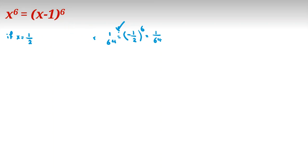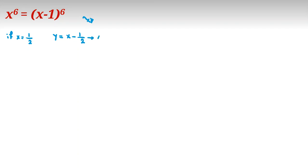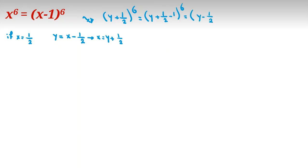Now let's define a variable substitution so that zero is a root. Since x equals one half works, we define y equal to x minus one half, so x equals y plus one half. The left hand side becomes y plus one half to the power of 6, and the right hand side becomes y minus one half to the power of 6. The only difference between the two sides is the sign on one half, which makes this a much nicer form to work with. Note that y equals 0 is one answer.